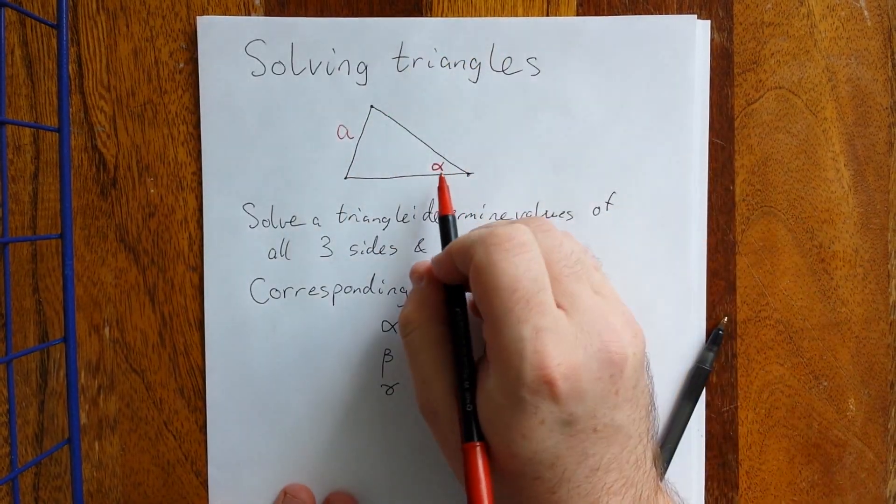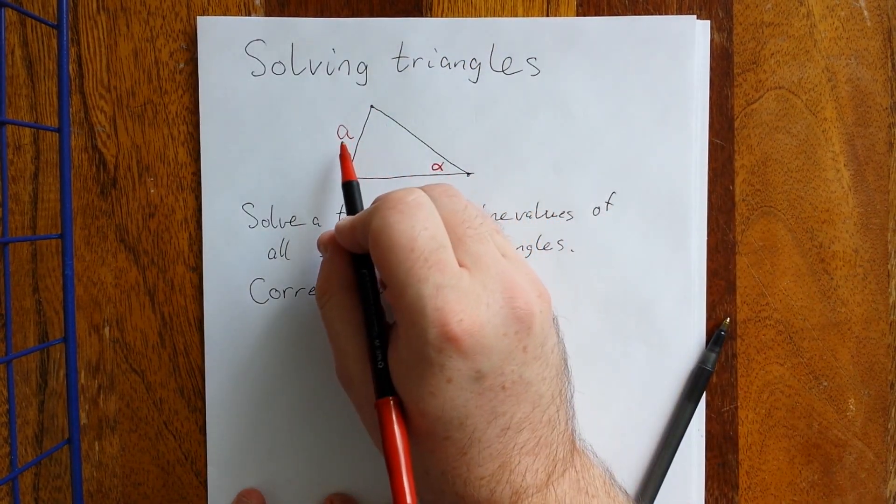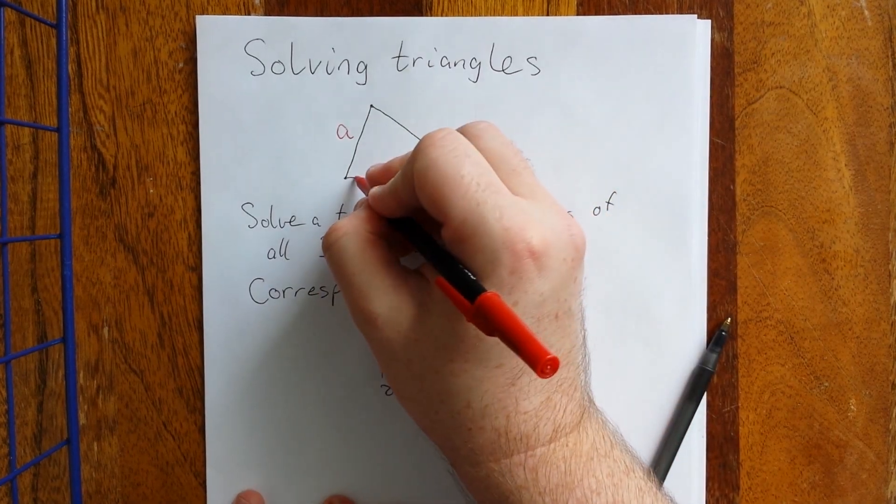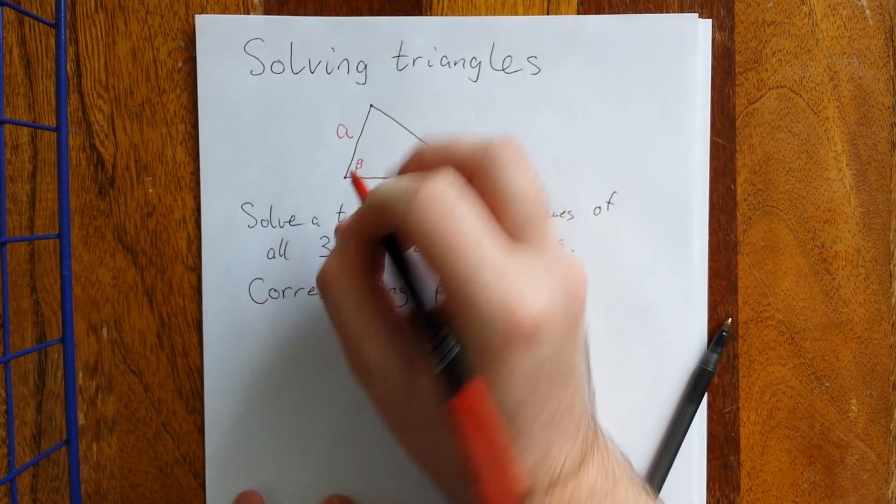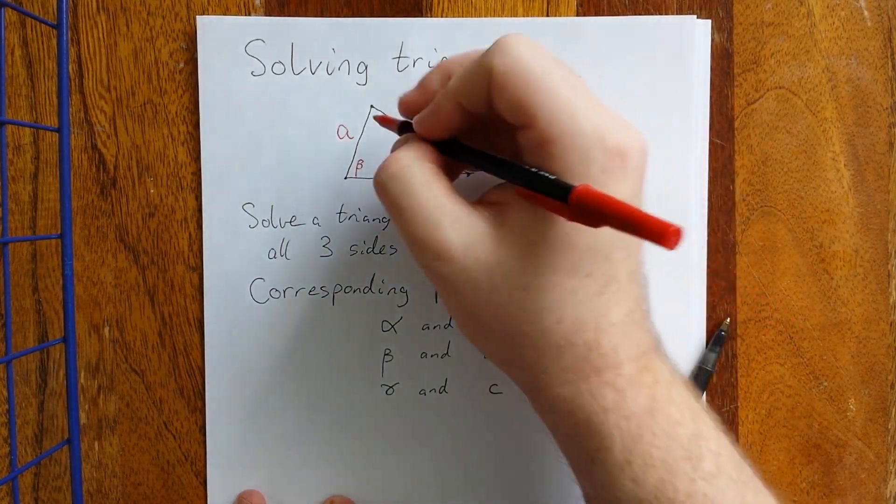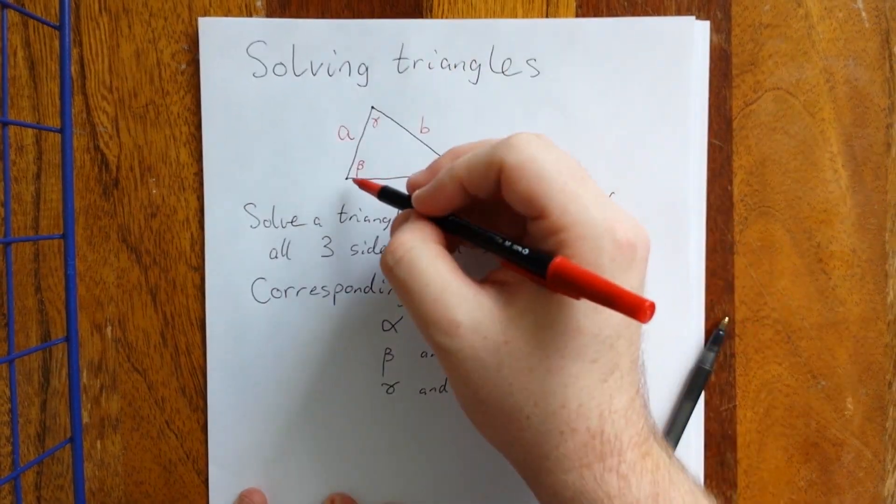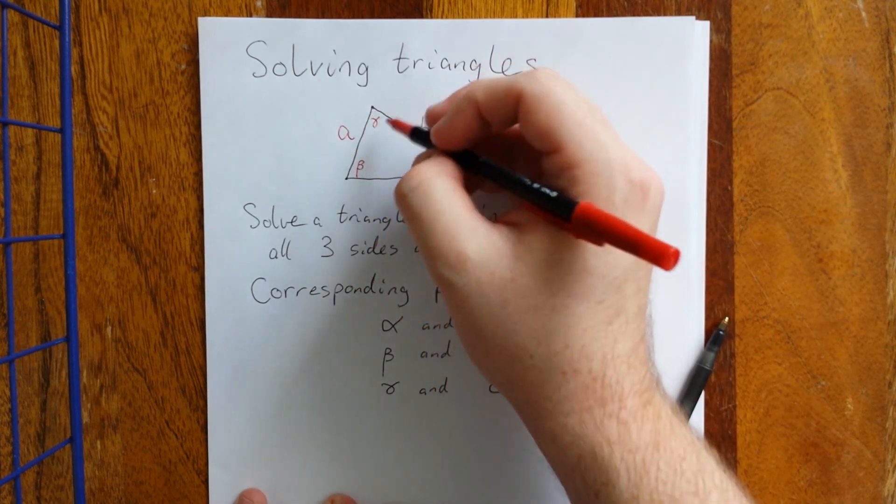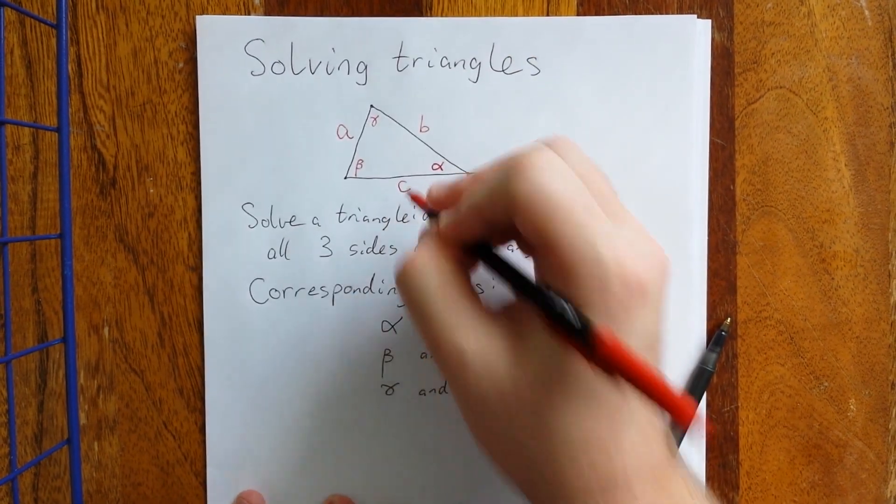When labeling, if I'm going to label this angle as alpha, then the side across from it would be A. If I'm going to label an angle as beta, then the side across from it would be B. And if I'm going to label an angle gamma, gamma is comprised of the sides A and B, so C is going to be across from it.